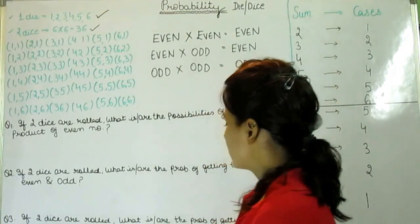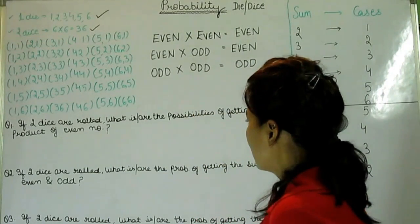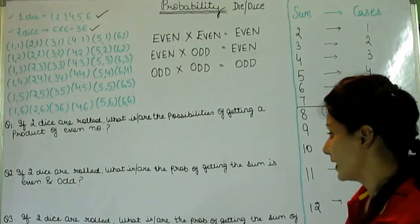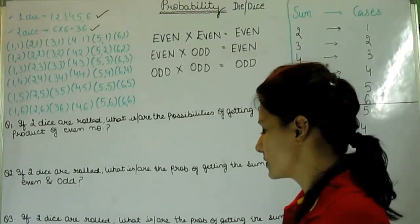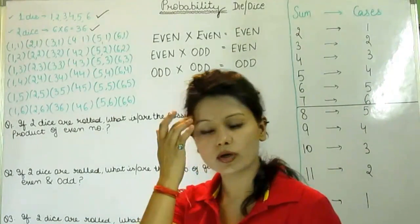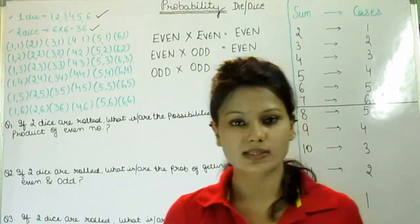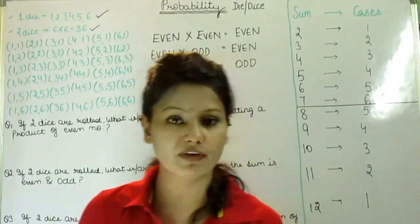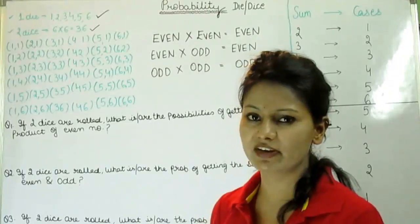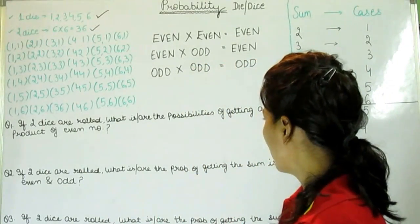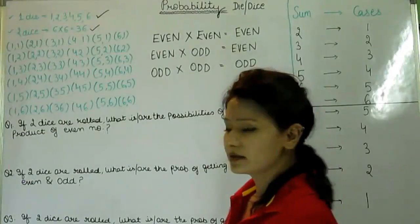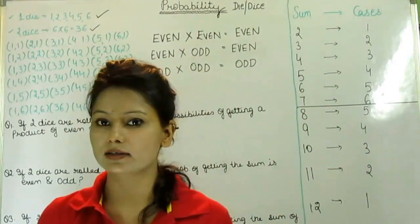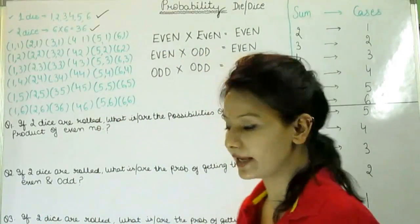Let's start from first question. The question is if two dies are rolled, what are the possibilities of getting a product of even numbers? In the last video I taught you the sum - what is the probability of getting a sum of 9, sum of 8 and sum of 7. But now in this video I am teaching you different portions based on products, prime numbers and even numbers and odd numbers.